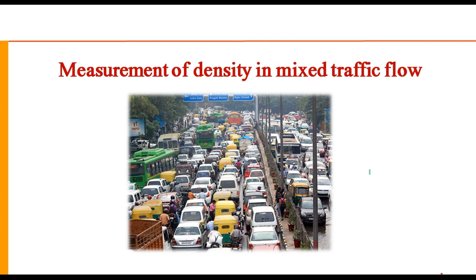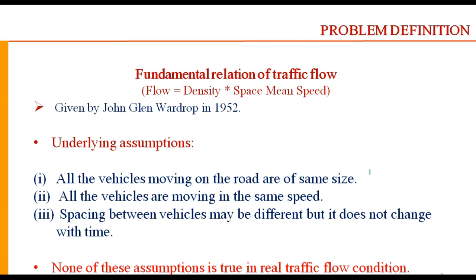Hello friends. Today in this presentation we will discuss measurement of density in mixed traffic flow. There are three fundamental flow parameters: speed, volume, and density. Measurement of speed and traffic volume is quite straightforward, but density is relatively difficult to measure in the field, and therefore it is generally calculated using the fundamental relationship between flow, density, and space mean speed. We measure flow and speed in the field and calculate density using this equation, which was given by John Wardrop in 1952.